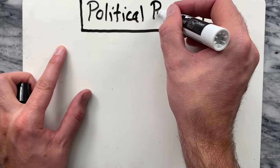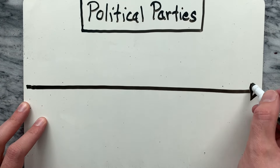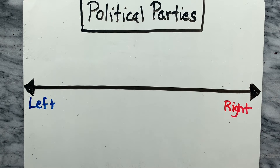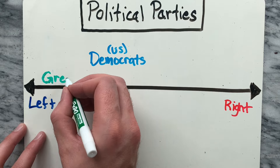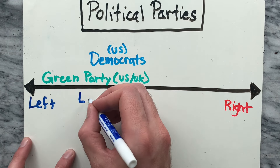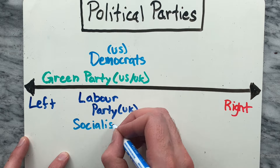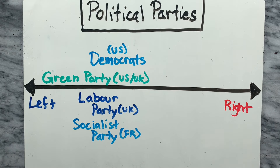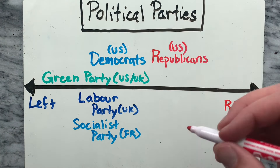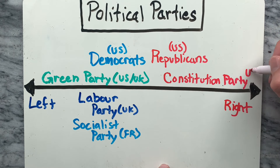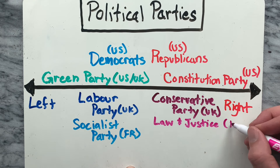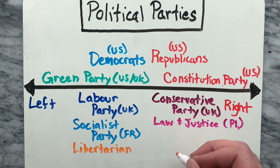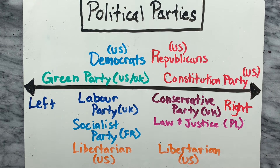What about political parties? On the left wing, you'll find parties like the Democrat Party from the United States, the Green Party from the United Kingdom and the United States, the Labor Party from the United Kingdom, and the Socialist Party from France. Right-wing parties include the Republican Party from the United States, the Constitution Party from the United States, the Conservative Party from the United Kingdom, and the Law and Justice Party from Poland. Lastly, the Libertarian Party can be placed on the left or the right depending on the topic.